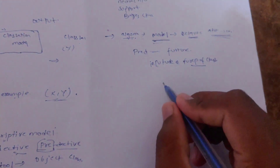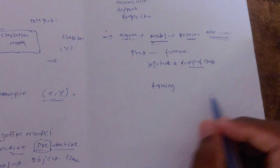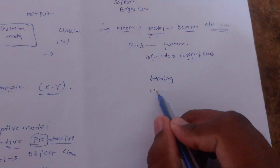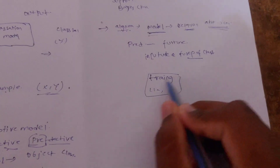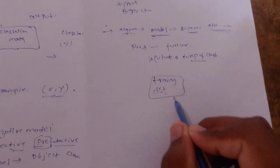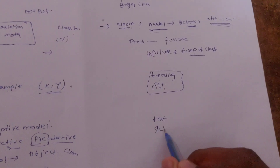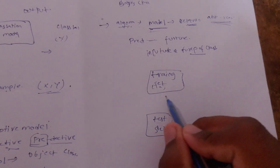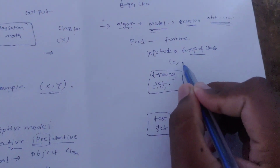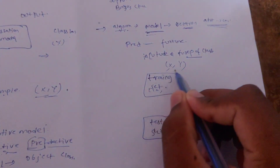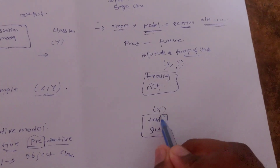Suppose we have a training data set. This training data set includes classes, attributes, and the training data — X and Y tuples are determined with the attribute set and class set. The test data set contains only the attribute set — the class set is what we need to predict in the future.